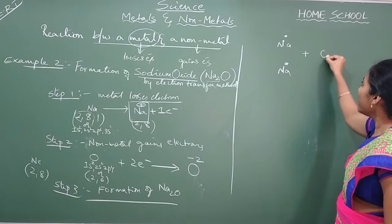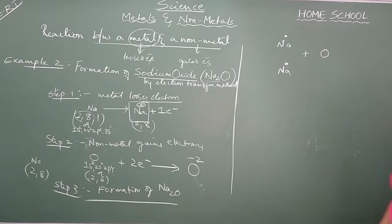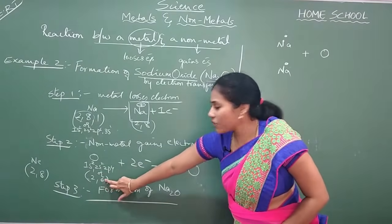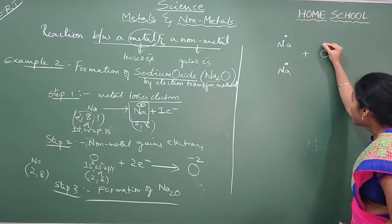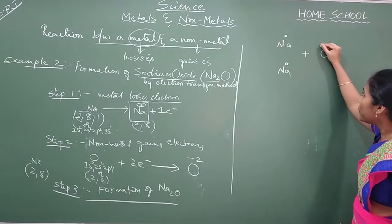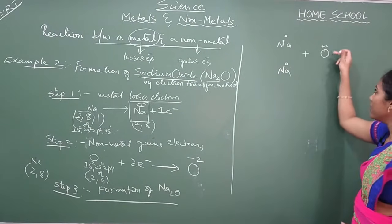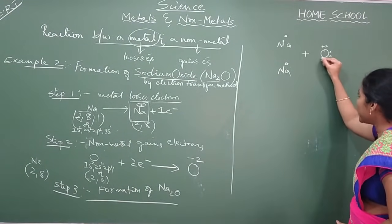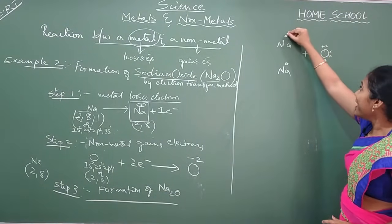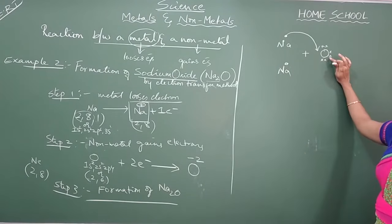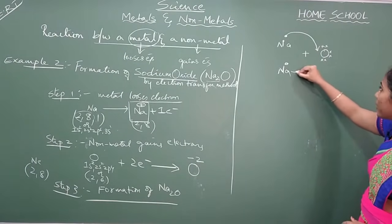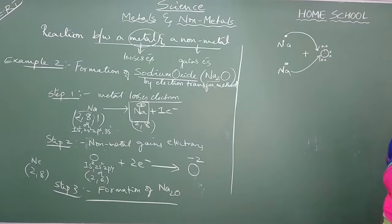For the oxygen dot structure — how many valence electrons are there? 6. The last shell has 6 electrons, so you are showing 6 dots. Just to have a variation, I will put crosses here — any symbol, dot or cross. I will put 6 crosses: 1, 2, 3, 4, 5, 6. What happens here? This Na loses 1 electron and it gets transferred to the oxygen. And this sodium also loses its electron and it gets transferred to the oxygen.